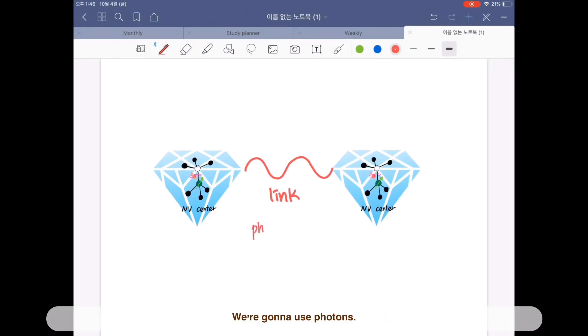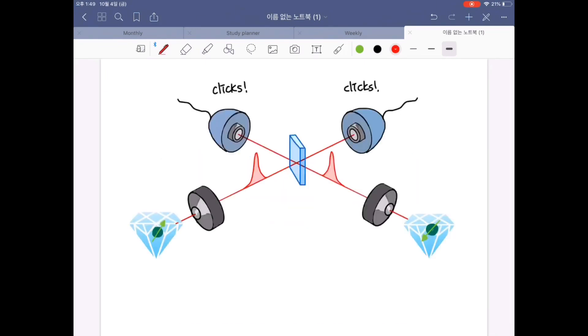We are gonna use photons. There's two NV centers and two different diamonds. First, we make each of these NV centers emit a photon which is entangled with the spin state.